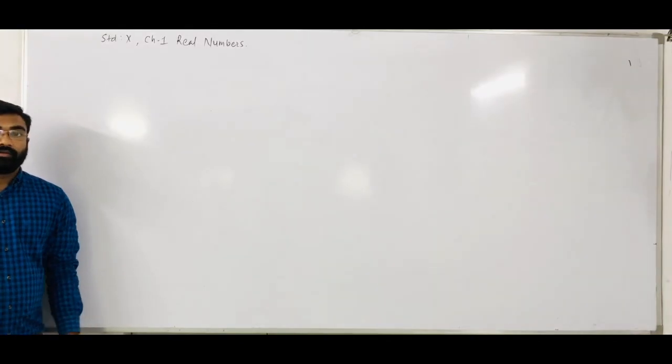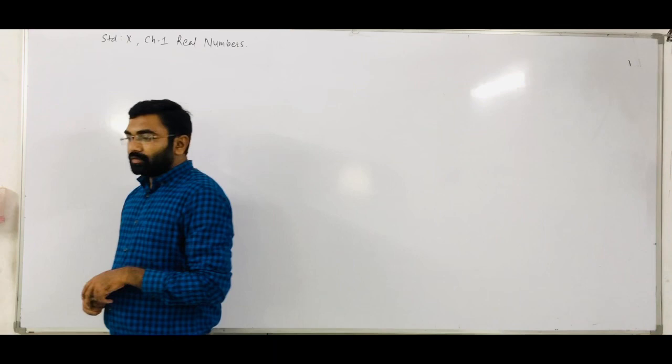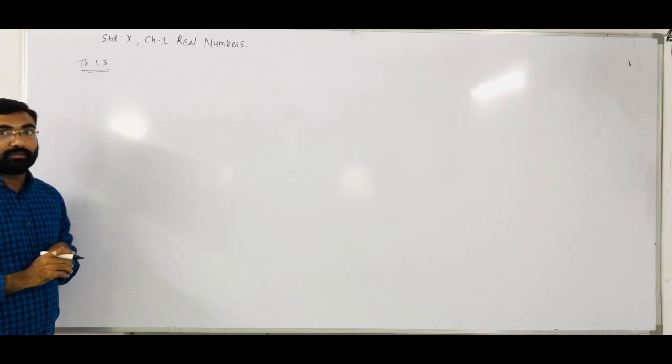Hello students. Standard Time, Chapter No. 1, Real Numbers. Today we discuss about the proof of the irrationality of numbers. In the proof of irrational numbers, we have to first discuss Theorem 1.3. So that theorem I will write here and then we will discuss it.